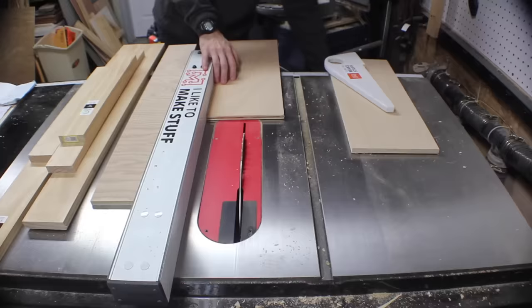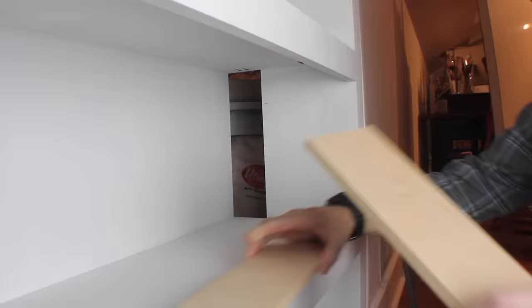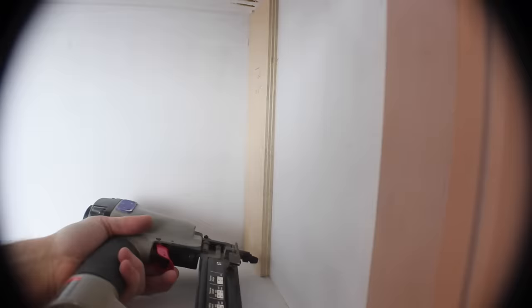I cut some extra pieces of plywood to fill in the gaps from the inside. Since they're painted white and there's going to be books in front of them, you ended up not seeing them anyway. I nailed them into the MDF and it was all good to go.